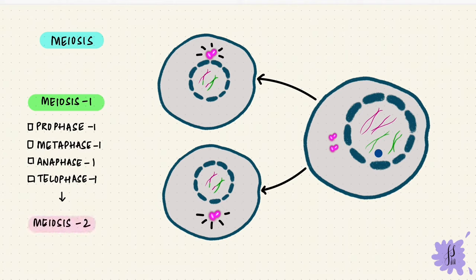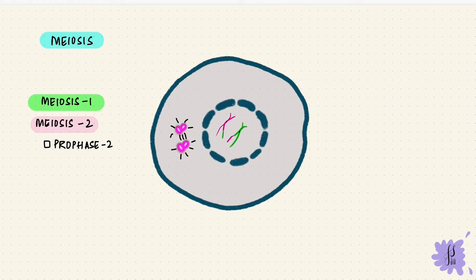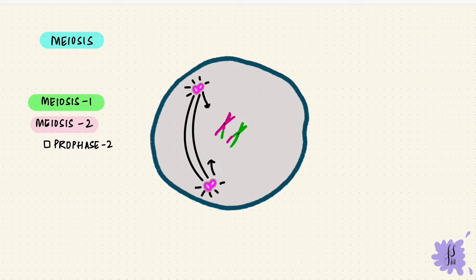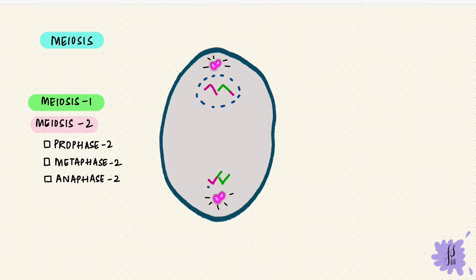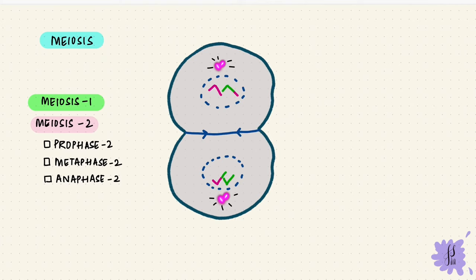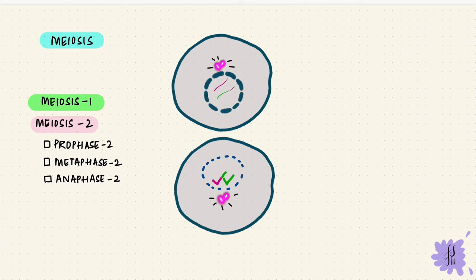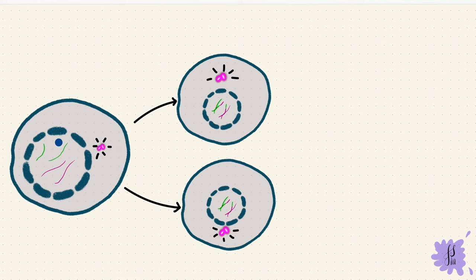Now we go into the second meiotic division, which is easier than the first because the steps are like mitosis. There is an interphase before this but no DNA replication, because the chromosomes are already doubled. In prophase two, the chromatids condense and spindles from the centrioles disintegrate the nuclear membrane and attach to the centromeres. They line up along the equatorial plate during metaphase two, split at the centromere and move toward opposite poles during anaphase two, and reach the poles during telophase two. The nuclear membrane reforms, cytokinesis divides the cells, and the chromosomes uncoil to become thread-like again.